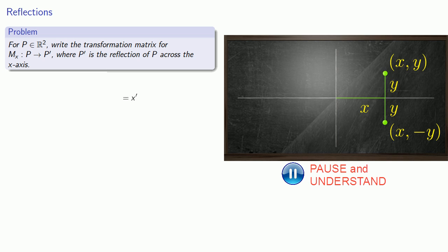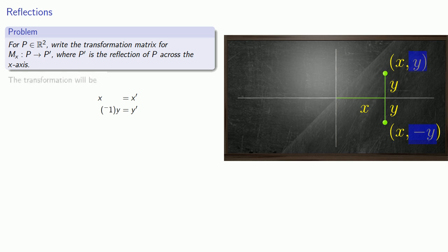So our new x-coordinate is x, the same thing we started with, and our new y-coordinate is negative 1 times y. Because we want to write the coefficient matrix, we'll write x as 1x plus 0y, and the new y-coordinate as 0x plus negative 1y. Keeping only the coefficients, we get our transformation matrix.